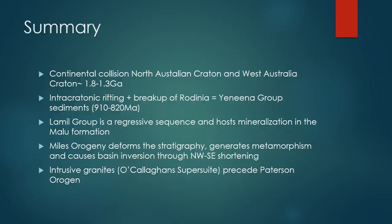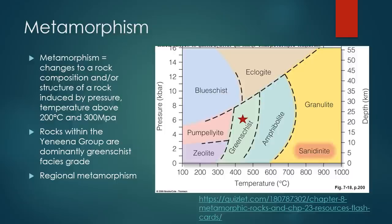We're going to bring this geological context and look a bit more in depth at the granites and the metamorphism and how that can generate mineralisation. Metamorphism is defined simply as the changes to a rock's composition and/or structure induced typically by pressure and temperatures above 200°C and 300 megapascals. If you simplify that: if you take a rock and put it under more temperature and more pressure, you will start to change the minerals and the texture of that rock — and that is what metamorphism is.